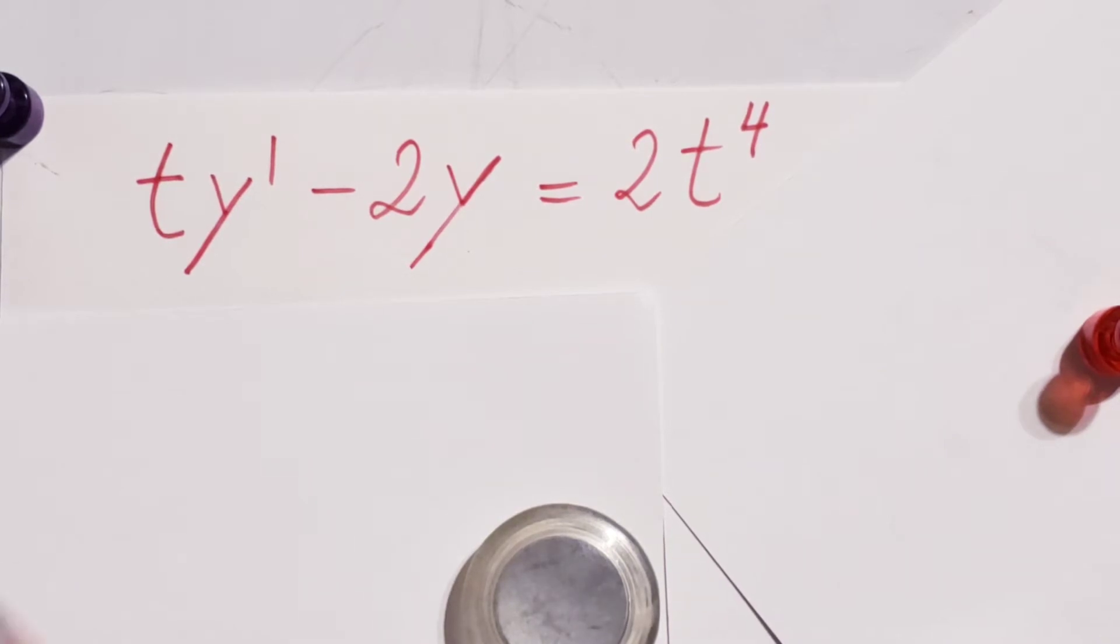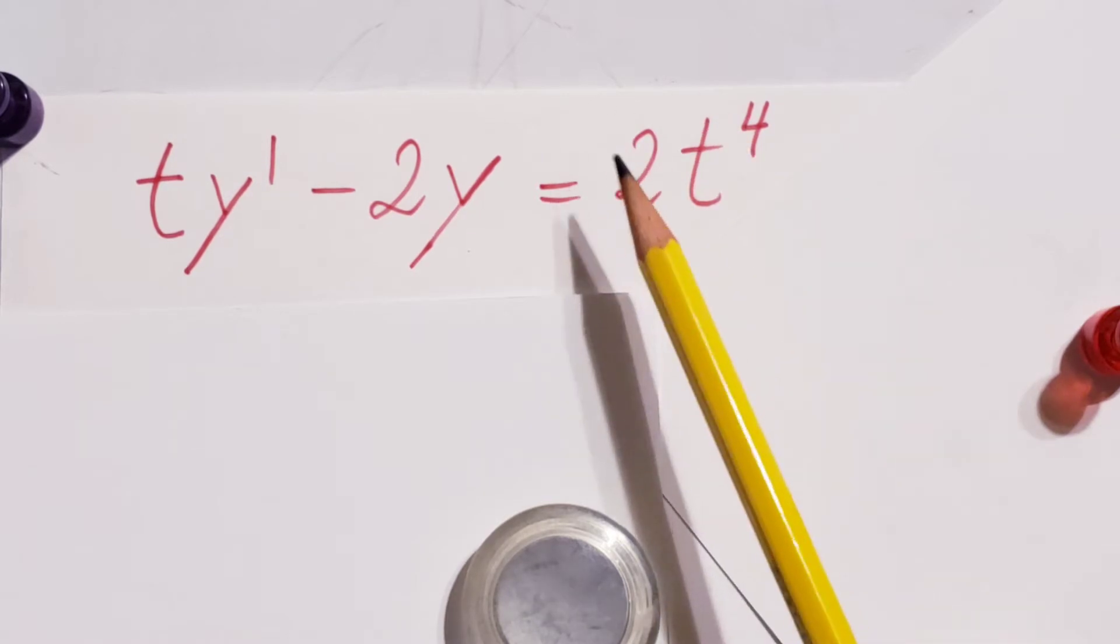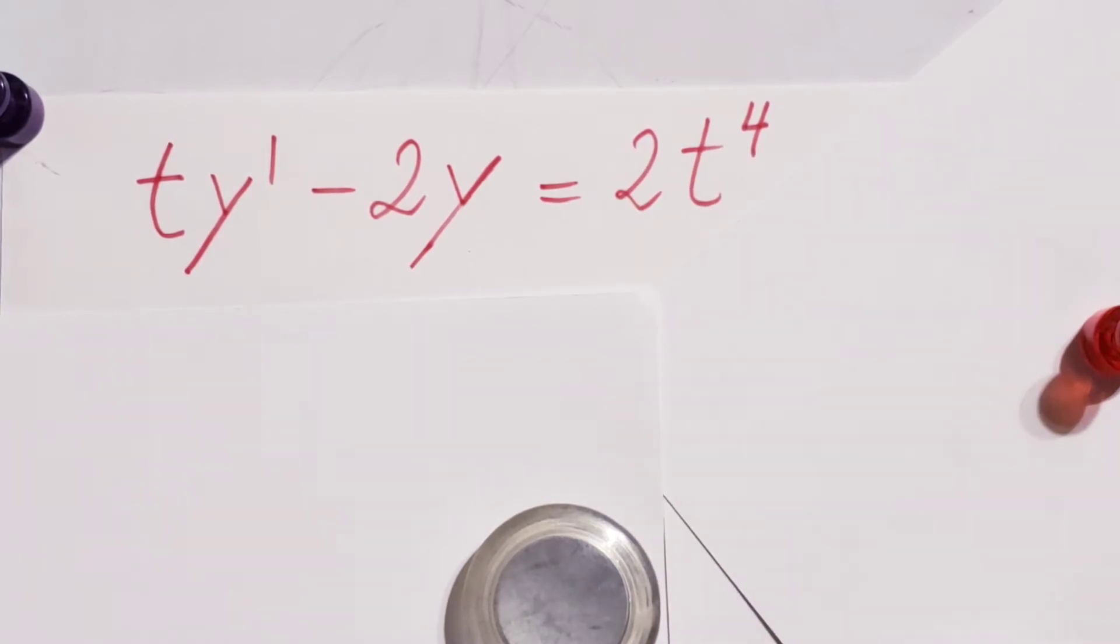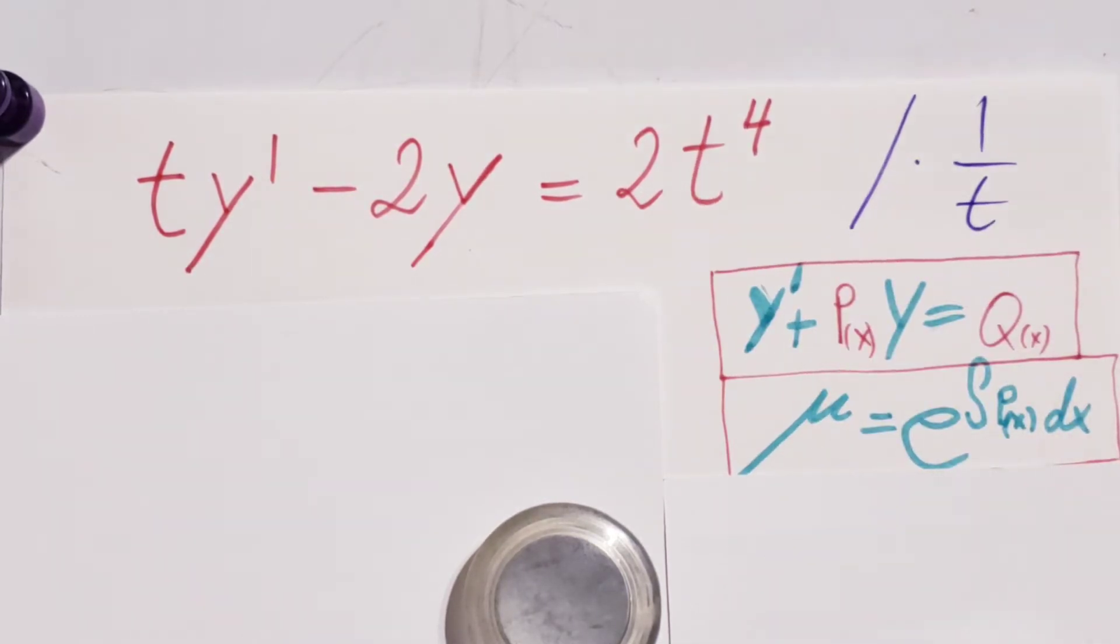We can see that this is a first order differential equation. We have y prime and we have just a simple y here. Here we have a simple polynomial. So one of our first ideas should be integrating factor method.